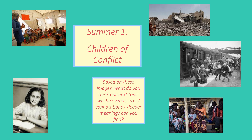I want you to do yourself a topic title which is Children of Conflict. I then want you to move on to using the images that you can see in front of you and start to think about mapping out some ideas linked to our new topic. What links and ideas are generated based on the images? Is Children of Conflict linked to one time period or can you see a range of time periods? And then think about any deeper meanings that you can find. You might even recognise one of the people in the images.